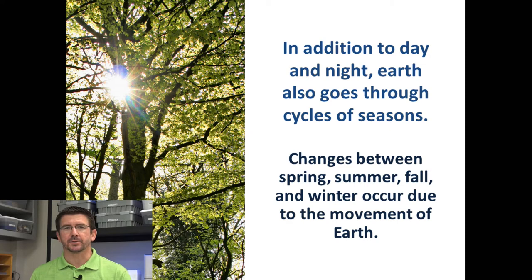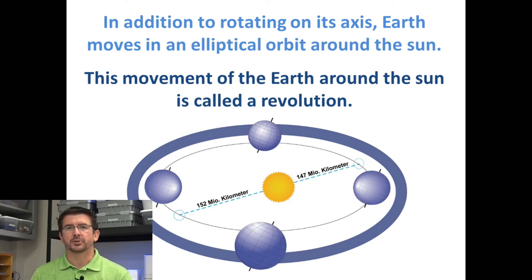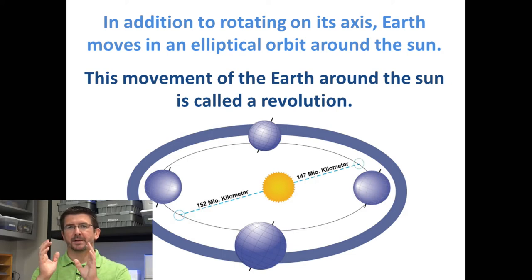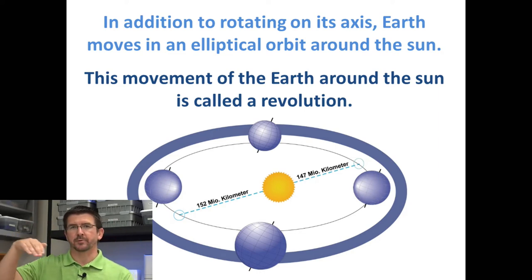As we see these changes of seasons, it's important to understand that this is a cycle that happens because of Earth's movement in space as Earth moves around the sun. In the last lesson, we talked about how Earth rotates on its axis, which causes the cycle of day and night. But the motion we're going to be looking at today is what is called revolving. To revolve just means to go around something — rotate meant to spin in place on its axis.